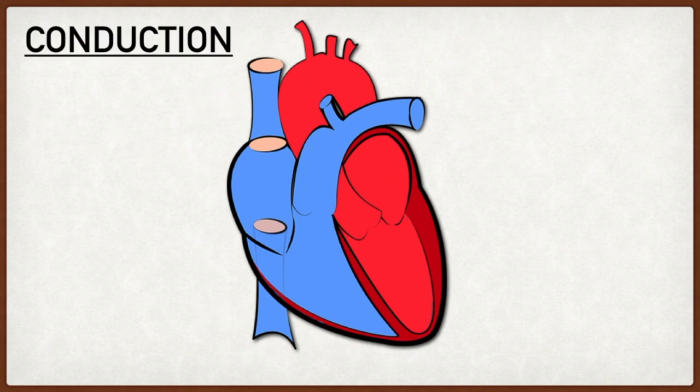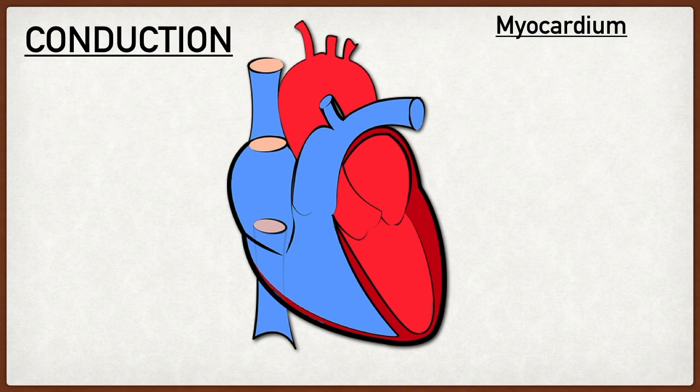Now that we have a good understanding of the heart's anatomy, let's talk about the conduction system. The heart has what's called automaticity — the innate ability to generate its own action potentials, which leads to depolarization and contraction. It does this using specialized cells within the myocardium. The first cell type is the pacemaker cells, or nodal cells — specialized cells that have the ability to generate their own action potentials, leading to depolarization and ultimately contraction.